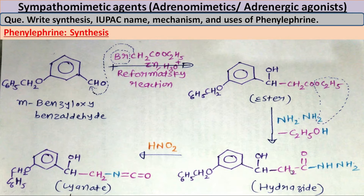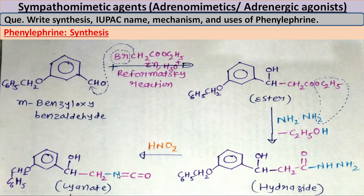This hydrazide will then be treated with nitrous acid (HNO2), and a rearrangement reaction will take place. The NH2 will be released, and this nitrogen will rearrange and come in between the two carbons, so that will be converted into CH2-N=C=O, which is known as cyanate. So here a rearrangement reaction occurs and the hydrazide is converted into cyanate, CH2-NCO.